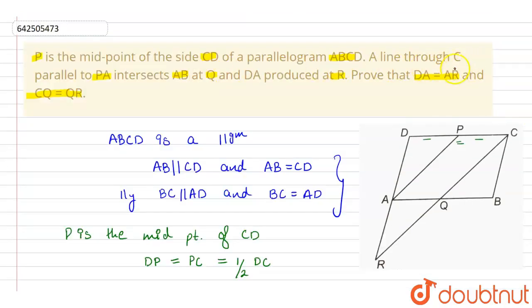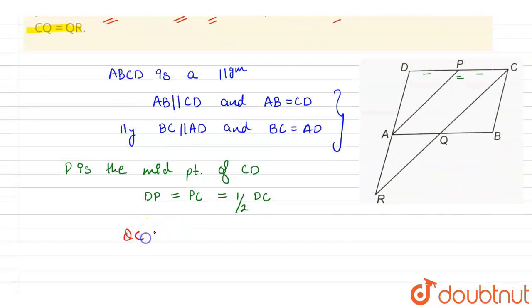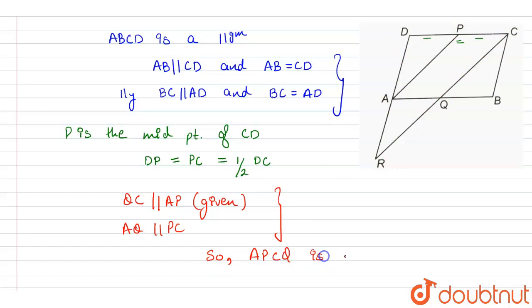It is given that QC is parallel to AP. Also, AQ is parallel to PC because the AB side is parallel to DC, so parts of AB are also parallel to DC. Since QC is parallel to AP and AQ is parallel to PC, APCQ is a parallelogram.